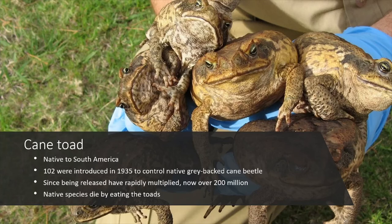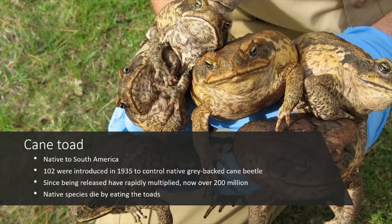The solution proposed was to introduce cane toads, which are native to South America. 102 of them were introduced in 1935 to control native grey-backed cane beetle populations. However, since being released, they multiplied rapidly and now we have over 200 million in Australia. Unfortunately they are very toxic, meaning native species that eat the toads die. And the worst part is they never actually ended up eating the grey-backed cane beetles — making it a complete waste that has resulted in severe impacts to many ecosystems. Thanks for watching.